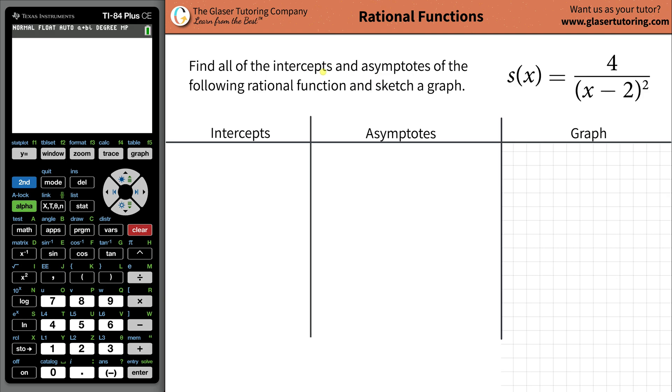Today I want to teach you how to find all the intercepts and the asymptotes of the rational function 4 divided by (x minus 2) squared. And then we're also going to sketch a graph. So first thing is, let's work with the intercepts.